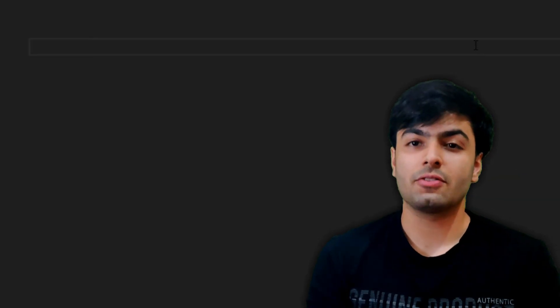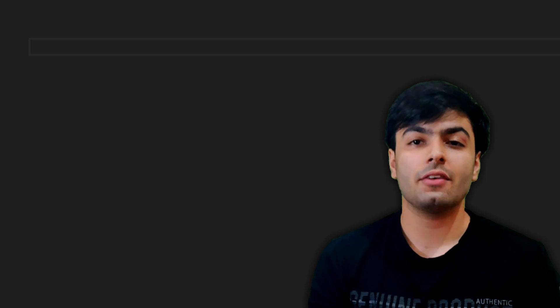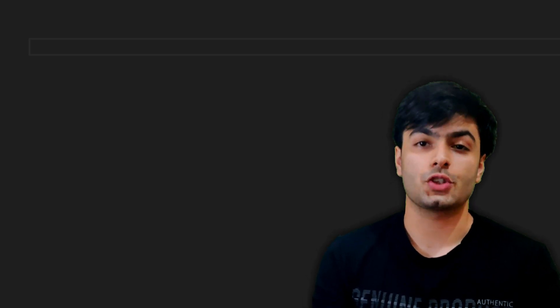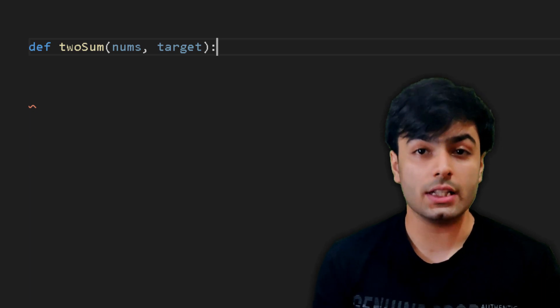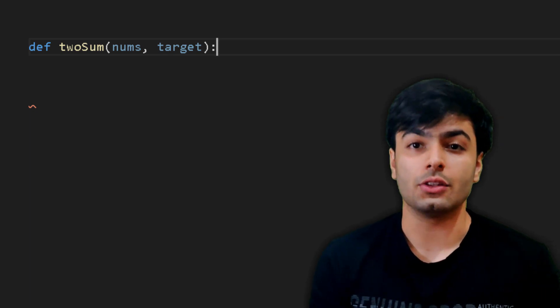The first step, as always, is to define our function using the def keyword followed by the name of our function. In this case, I will be calling it twosum, and this function takes two arguments, which is our list of numbers and the target value.